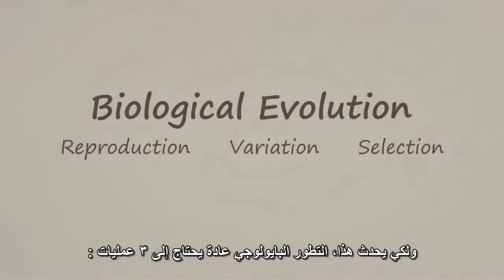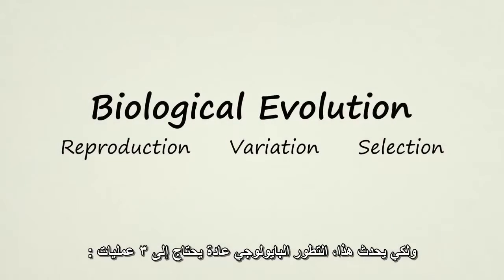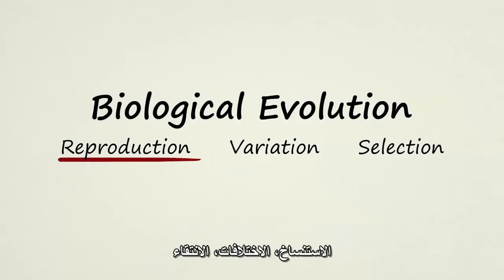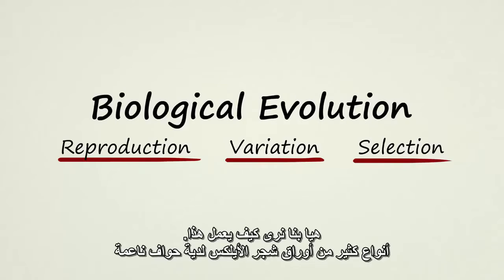For this to happen, biological evolution typically requires three conditions: reproduction, variation, and selection. Let's see how this works.